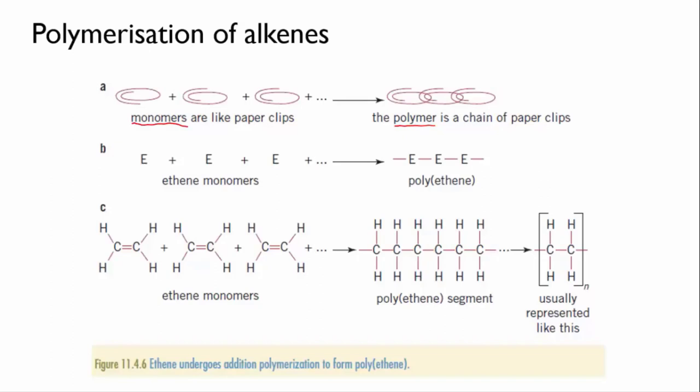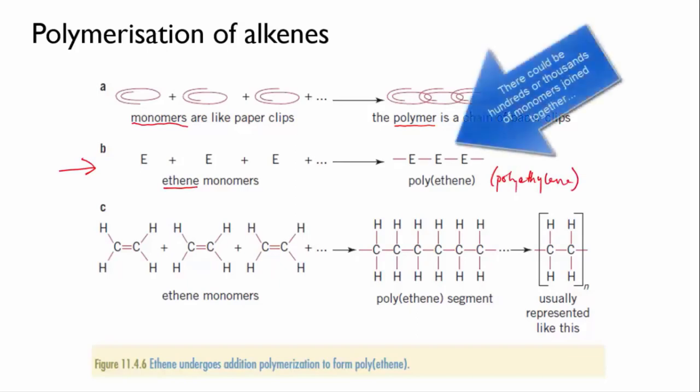But the simplest example of polymerization is the formation of polyethene, also known as polyethylene, from the alkene called ethene. Here it's just drawn as symbols. Each E represents an ethene molecule, and they string together to make a great long chain.